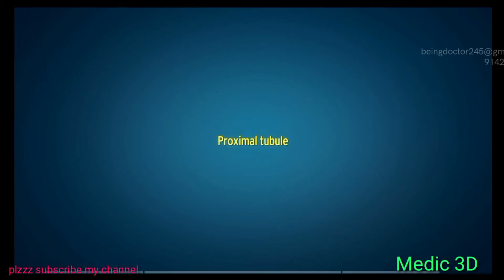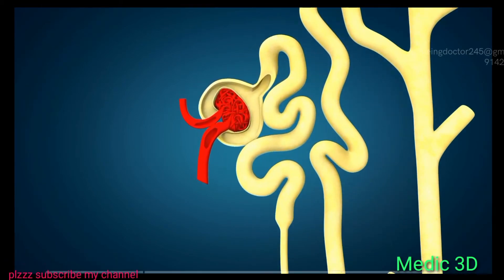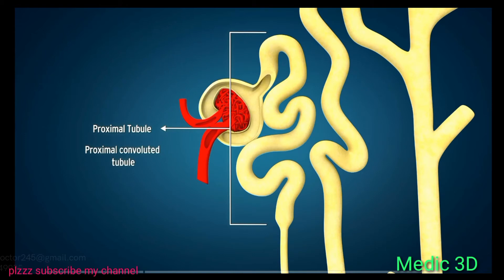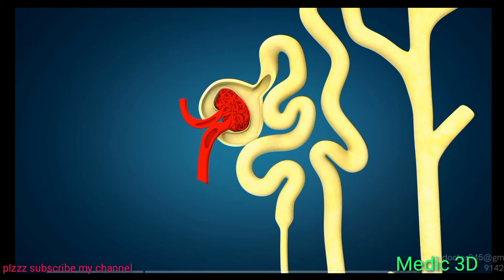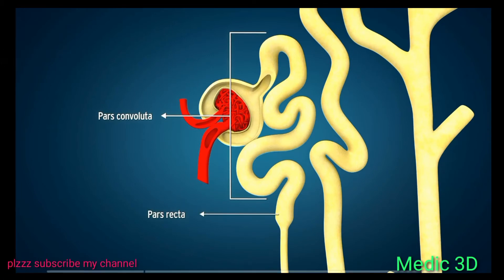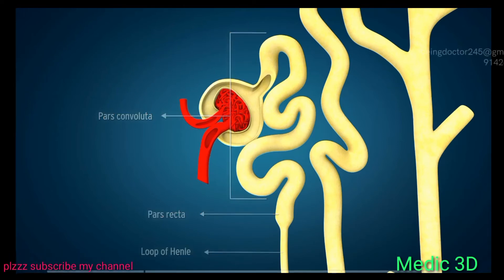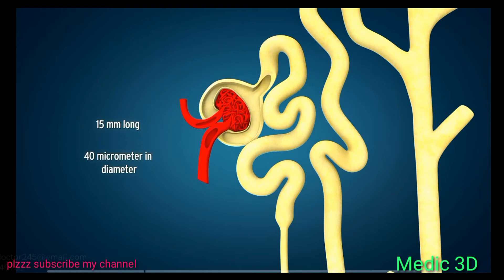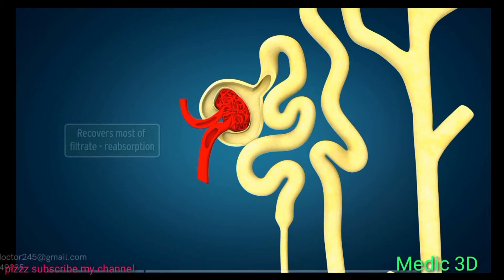The proximal tubule is the initial segment of the nephron, also called the proximal convoluted tubule (PCT) because most of it is coiled. It is divided into two parts: the initial major convoluted portion known as pars convoluta, and the distal smaller straight portion known as pars recta. It ends in a small straight segment that continues to form the loop of Henle.